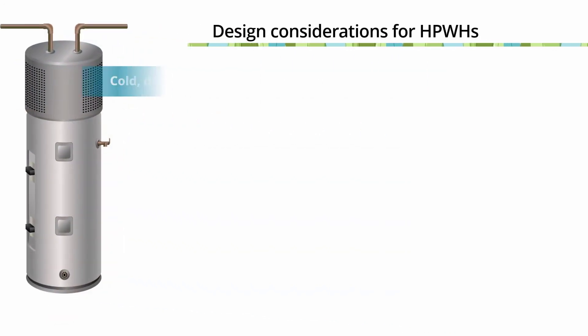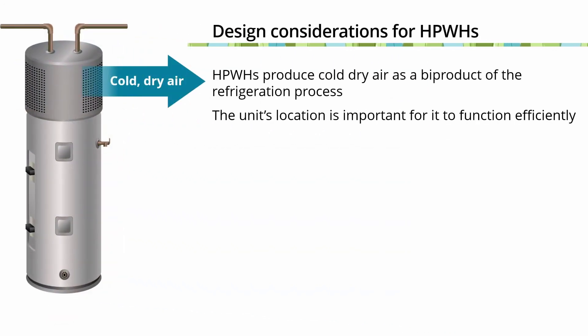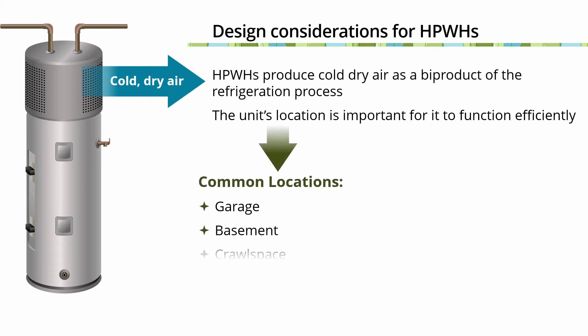Additional design considerations for selecting a heat pump water heater are based on its functionality. Since heat pump water heaters extract heat from the surrounding ambient air and produce cold and dry air as a byproduct of the refrigeration process, the location of the unit is important for it to function efficiently. Common locations include a garage, a basement, or a crawl space. These spaces are sufficiently buffered from outdoor ambient air temperature, and the cold, dry air produced by the unit is generally acceptable. In colder climates where temperatures fall below freezing, locating a heat pump water heater inside conditioned space is a viable option, although it's important to consider how to evacuate the cold, dry air it produces.